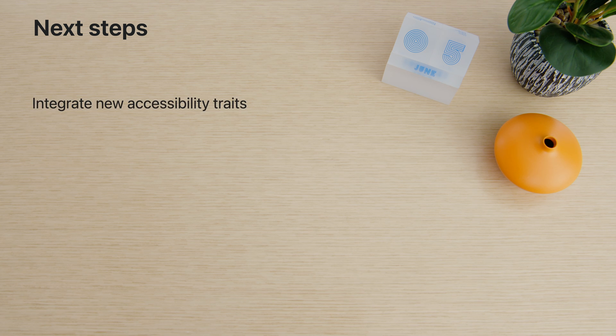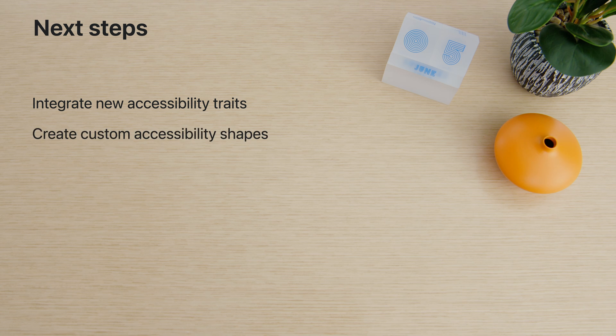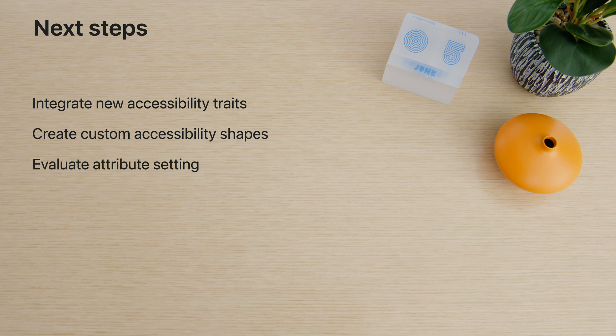When you are building custom UI, consider integrating accessibility traits like toggle and features like direct touch interaction to increase usability for everyone. Second, think about your views with custom shapes in SwiftUI — if the accessibility shapes do not match the UI, consider introducing a custom accessibility shape. And finally, I encourage you to evaluate how you are setting your accessibility attributes and identify if block-based setters make more sense in your app. At Apple, we believe accessibility is a human right. With your help, we can create technology that enhances and empowers everyone's lives. These new API additions are a great way to increase the usability of your app for people who rely on assistive technologies, and I encourage you to use all of them to build amazing accessible apps. Thanks for watching.